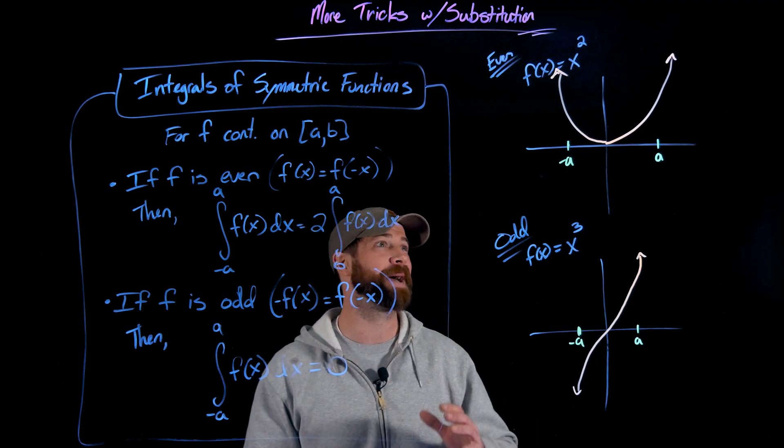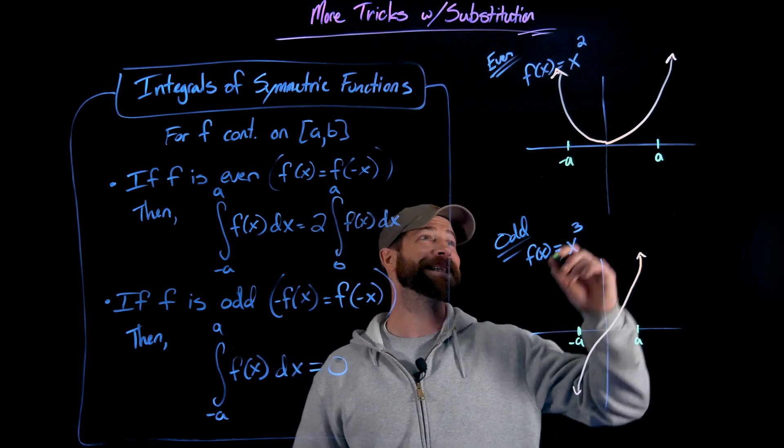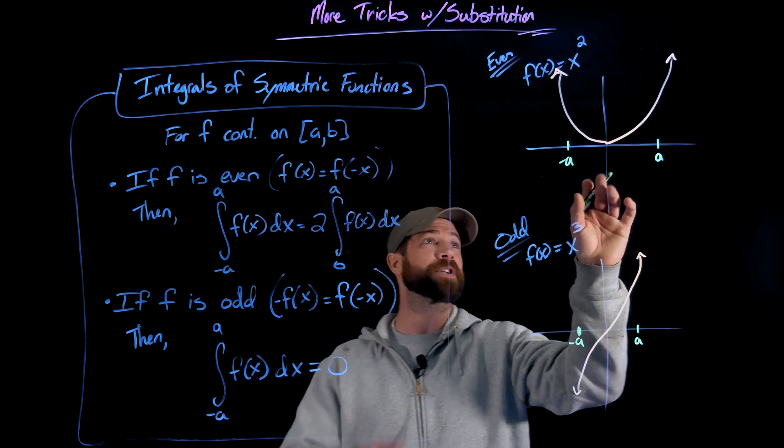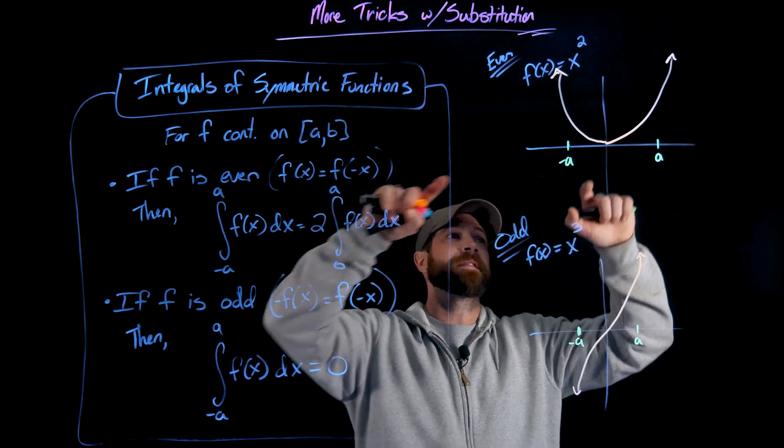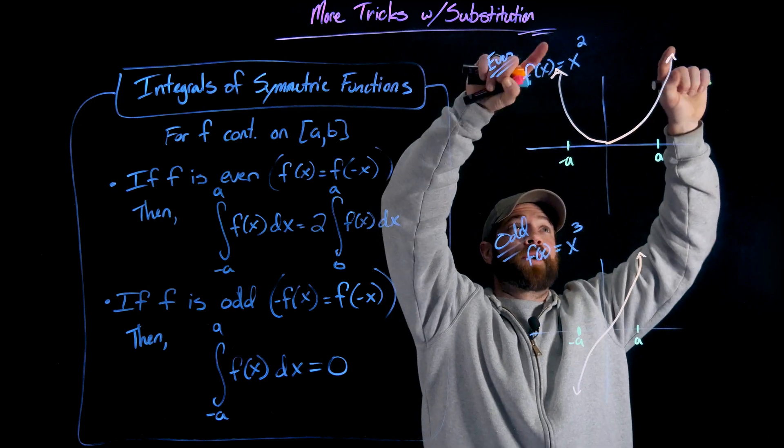And hopefully this makes a lot of sense in this visual explanation right here. But the idea is, if you have an even function, this statement right here of even function means they have exactly the same graph, but they're symmetric over the y-axis.